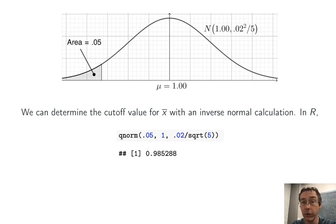We can do this using an inverse normal calculation. For instance, in R, it's a qnorm function. The first value I'm putting in there, 0.05, is the cumulative probability to the left. So the shaded area is 0.05. And then the next two arguments are the mean and standard deviation, 1 and 0.02 over the square root of 5.